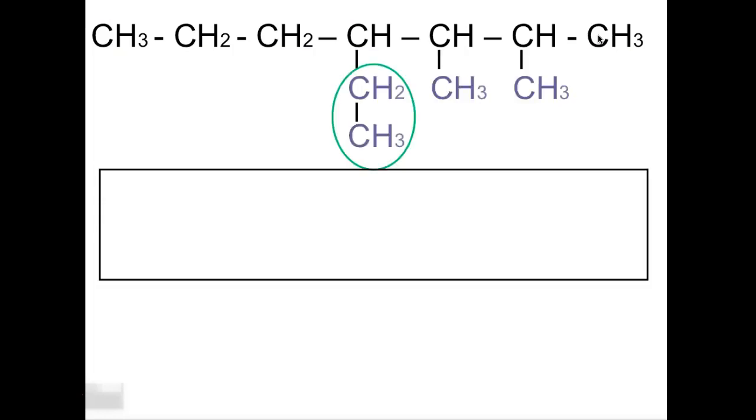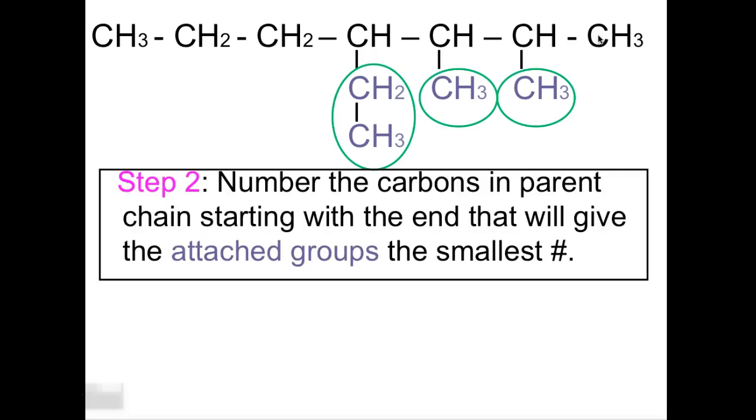So now what you're going to do is circle your branched chains. The number of carbons in the parent chain starting with the end, that will give the attached groups the smallest number. So that's why we started down with a one on the right because that would give us the smallest number.